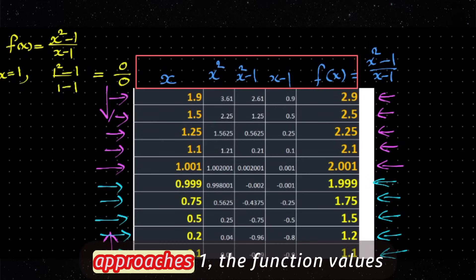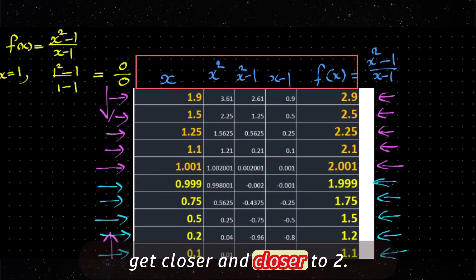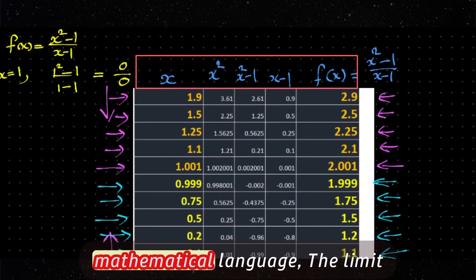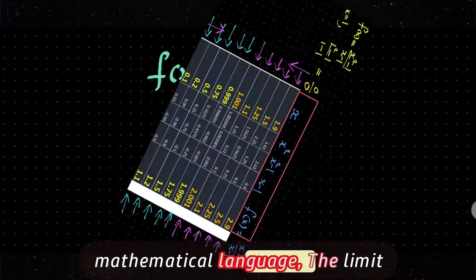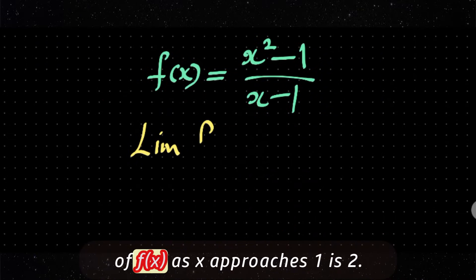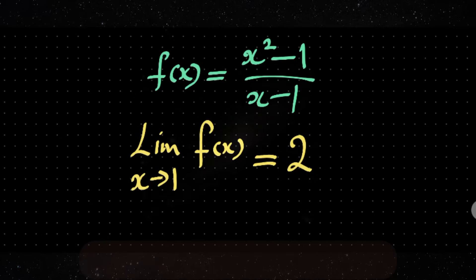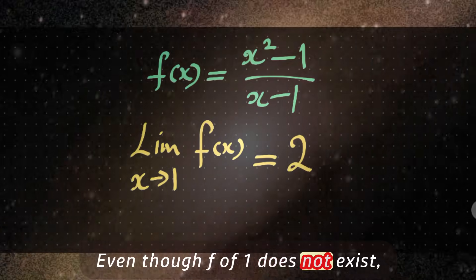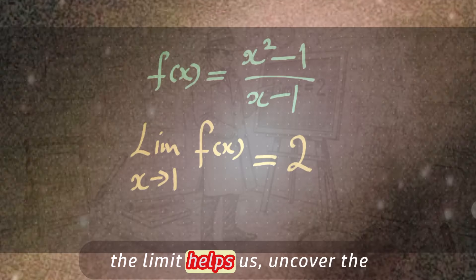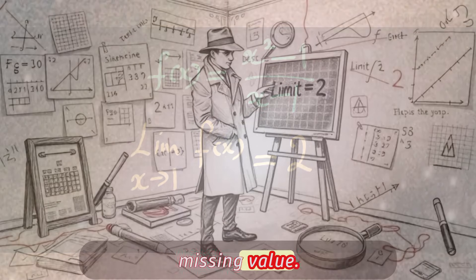So from both sides, as x approaches 1, the function values get closer and closer to 2. That's why we say in beautiful mathematical language, the limit of f(x) as x approaches 1 is 2. Even though f(1) does not exist, the limit helps us uncover the missing value.